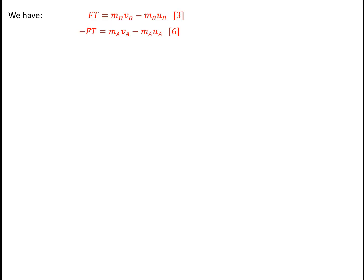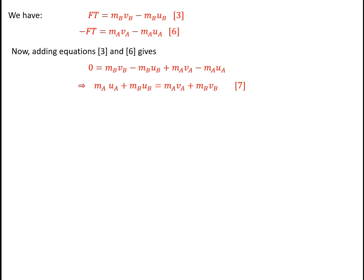Looking at equations 3 and 6 together: FT equals MB·VB minus MB·UB, and minus FT equals MA·VA minus MA·UA. Adding these two equations together gives 0 equals MB·VB minus MB·UB plus MA·VA minus MA·UA. This rearranges to MA·UA plus MB·UB equals MA·VA plus MB·VB.